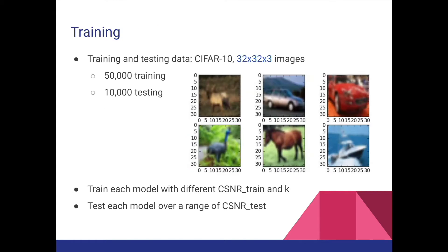To train the neural networks, we use the CIFAR-10 image dataset, which contains 50,000 training images of size 32×32×3, and an additional 10,000 images of the same size for testing. We train each model with different channel SNR and bandwidth constraint k, and test each model over a range of channel SNR values.